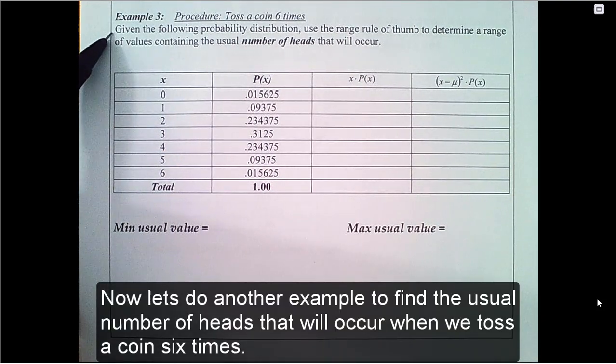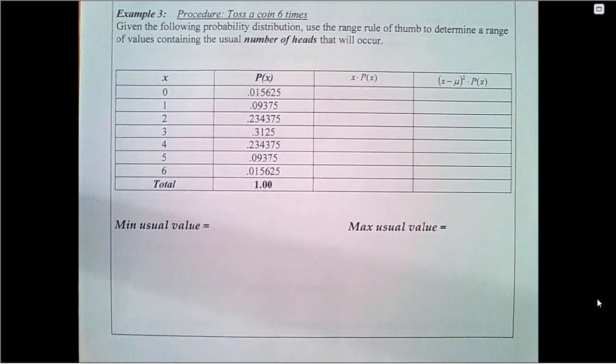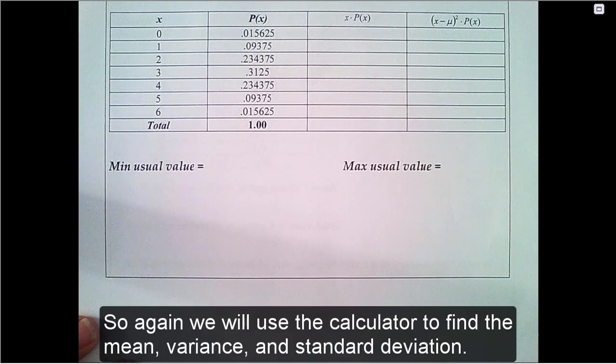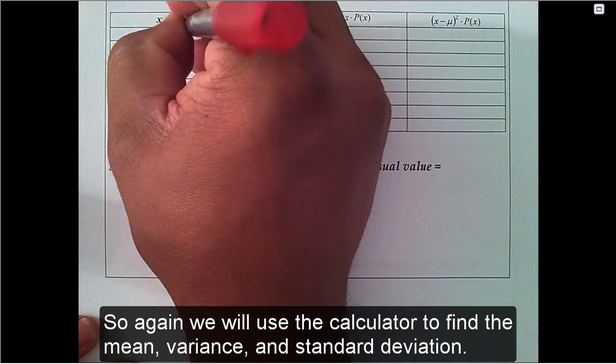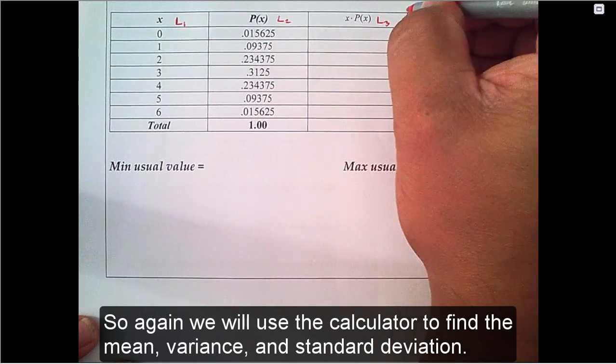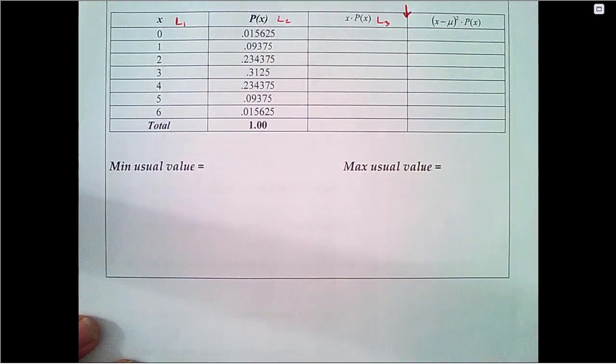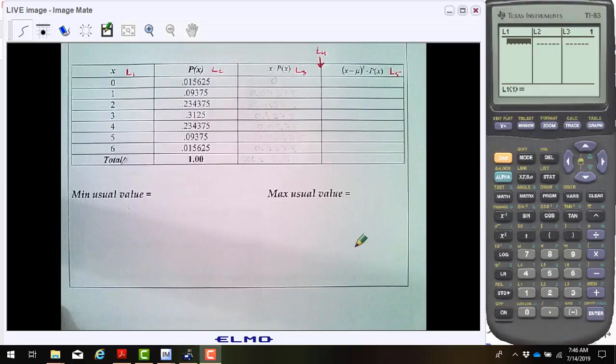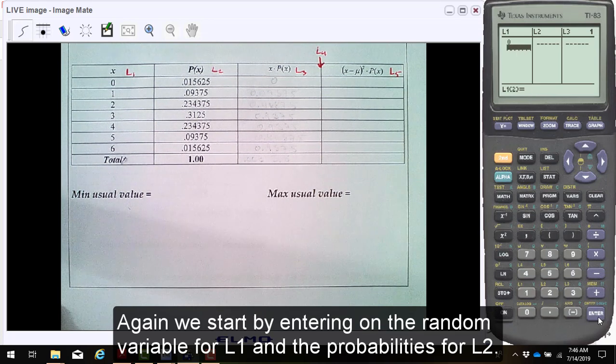Now let's do another example to find the usual number of heads that will occur when we toss a coin six times. Again, we will use the calculator to find the mean, variance, and standard deviation. Again, we start entering the random variable for L1 and the probabilities for L2.